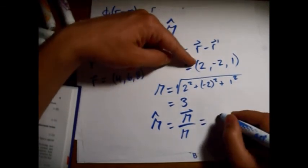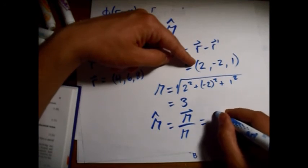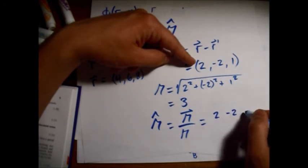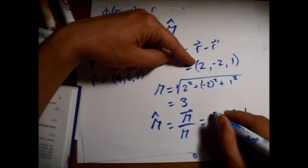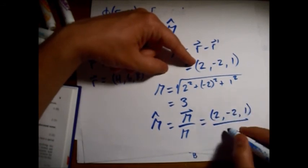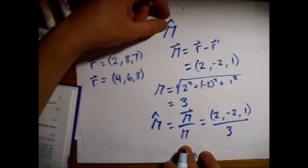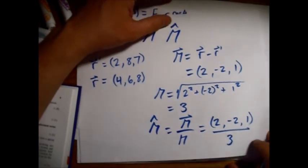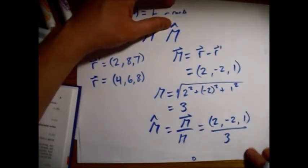Which is just equal to 2, minus 2, and 1, and those are each divided by the magnitude 3, so 2 thirds, minus 2 thirds, and 1 third.